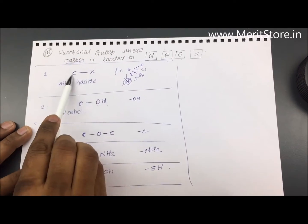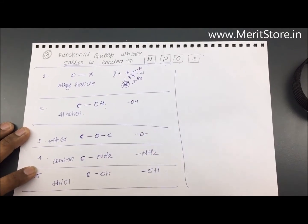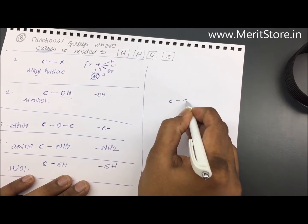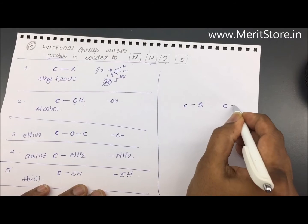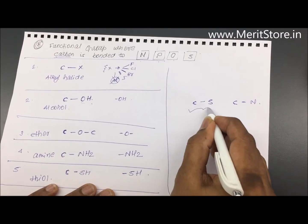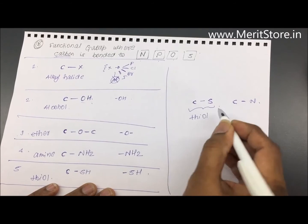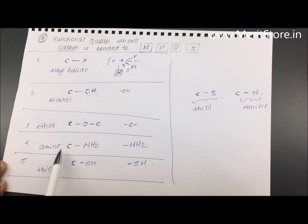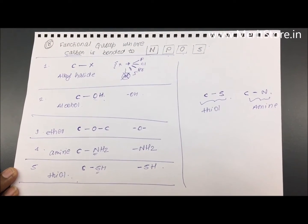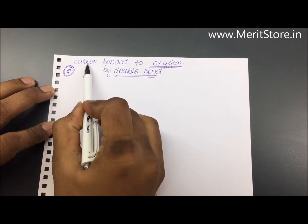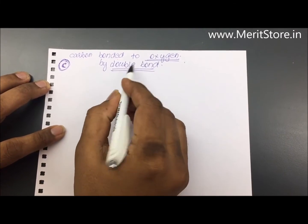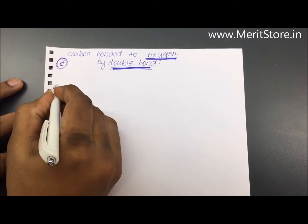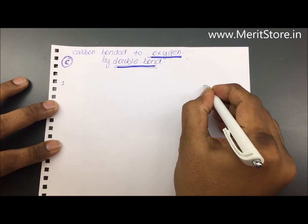For now, don't focus on the naming — just understand the functional groups in which carbon is bonding with these atoms. Also note that when carbon has a bond with sulfur it is called a thiol, and when it has a bond with nitrogen it is called an amine. The third section we are talking about is when carbon bonds to oxygen with a double bond — a C=O bond. Let's look at categories of such functional groups.